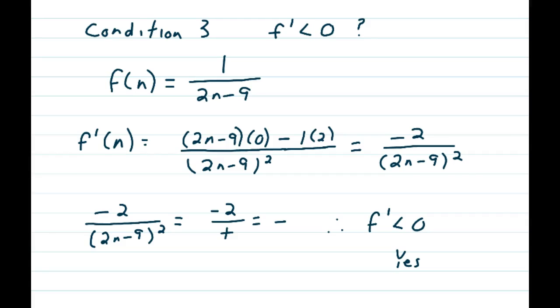On the top, you have a 2n minus 9 times the derivative of the top, which is just 0, minus 1 times the derivative of the bottom, which is 2. You get an answer for the derivative of negative 2 over 2n minus 9 quantity squared.